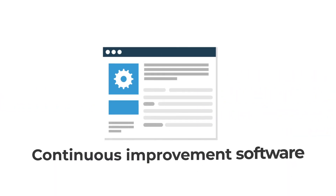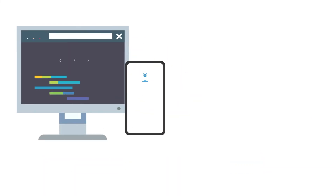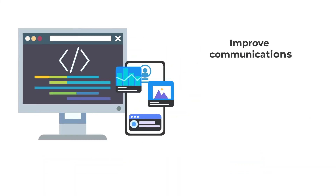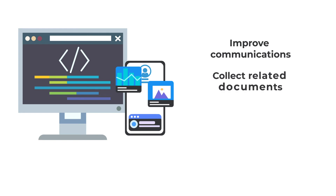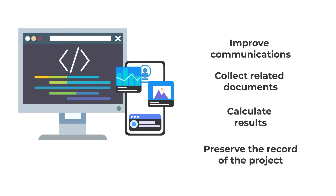Continuous improvement software is a must for DMAIC. Software helps structure the effort, improve communications, collect related documents, calculate results, and preserve the record of the project.